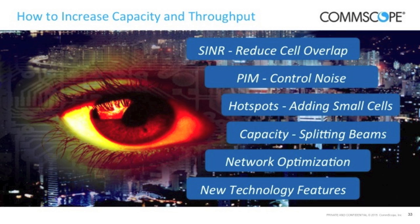In summary, the key factor to improve capacity and throughput is to improve the signal-to-interference and noise ratio. The main lever is reducing cell overlap through multiple different approaches. Another key factor is controlling noise and controlling PIM — it's crucial for LTE. We can add more capacity by adding small cells or by splitting beams. We need to keep optimizing the network as traffic patterns change. Also implement new technology features coming in the future. All of the features I talked about today are available today with the tools you already have.